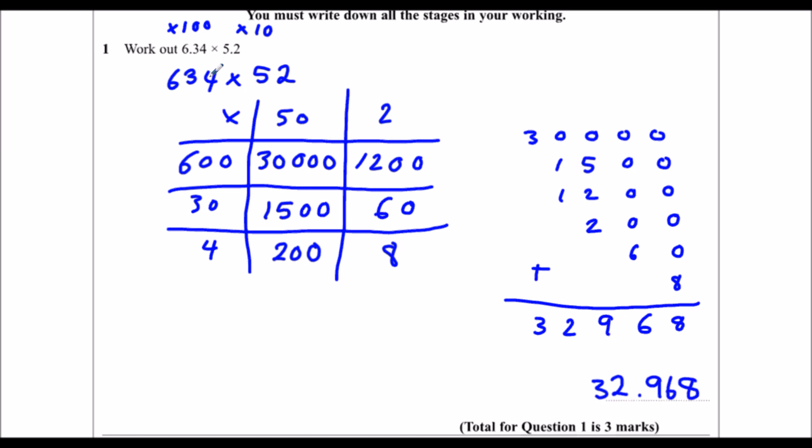You could just say, if you've got 3 numbers after the decimal point in the question, you can have 3 numbers after the decimal point in the answer. And you can also estimate to check your answer. We've got something kind of like 6 rounds to 6 times 5, which is 30. So our answer has to be close to 30.